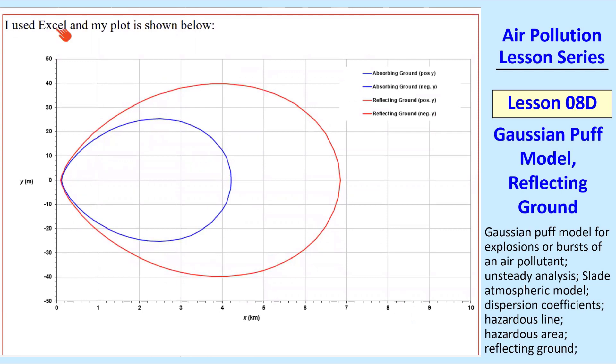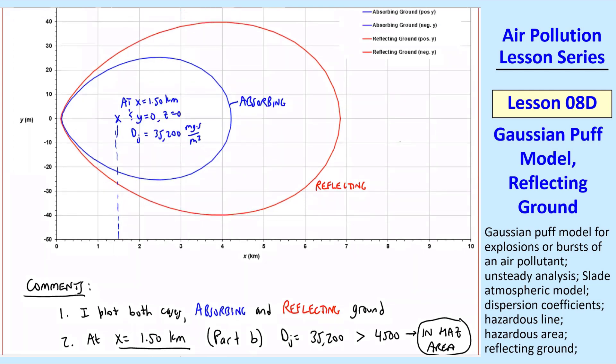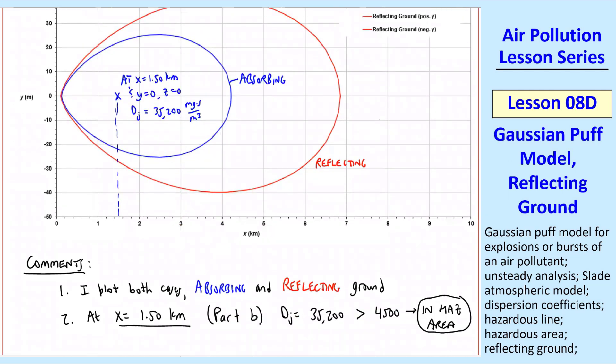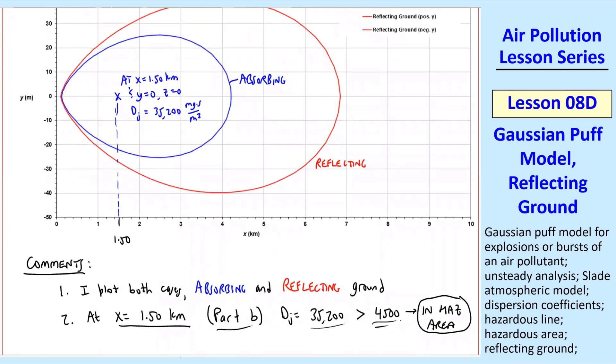Let me give you some comments. Comment one, I did plot both cases, absorbing in blue and reflecting in red. Comment two, at X equal 1.5 kilometers, that's our test case from part B. DJ was 35,200 milligram second per meter cube, which is greater than 4,500. We're plotting these values where DJ equals 4,500 in both cases. For the reflecting case, we get 35,000, which is much greater than 4,500. So this point is definitely well inside this hazardous area.